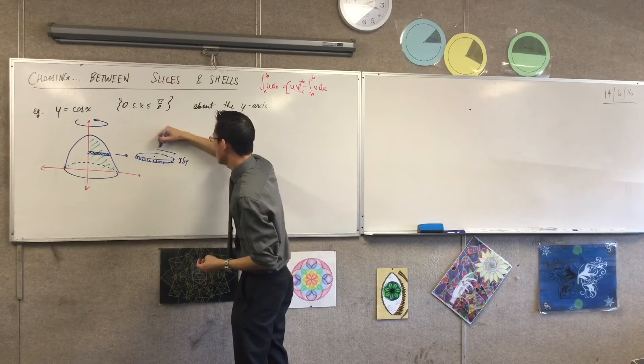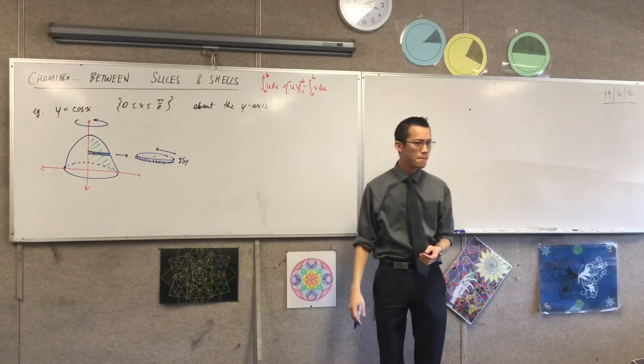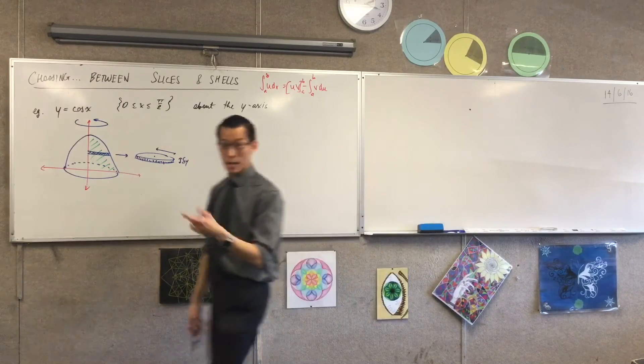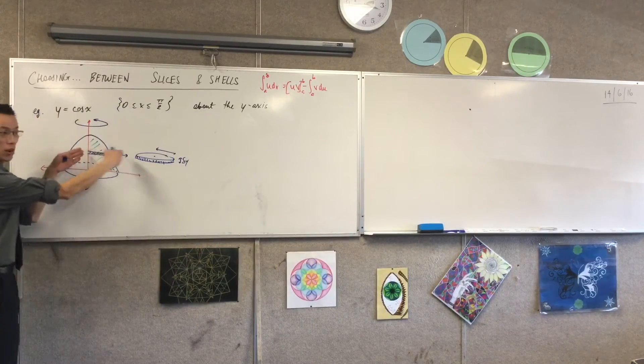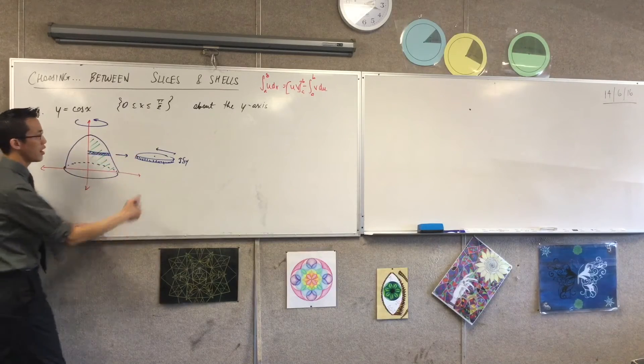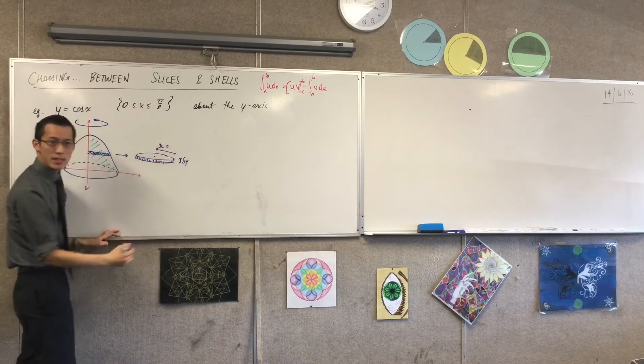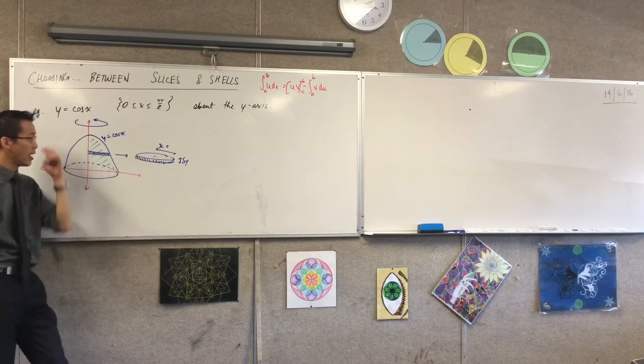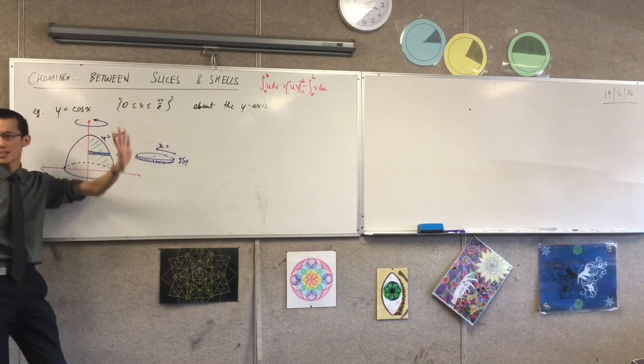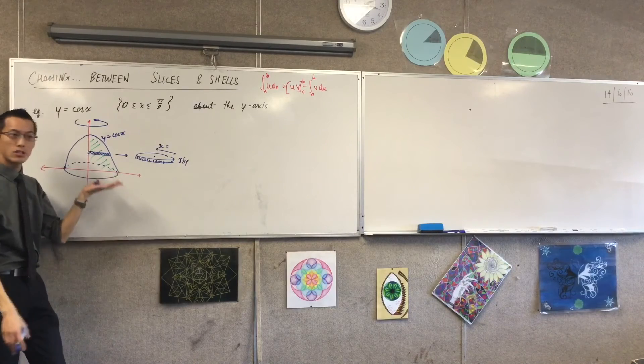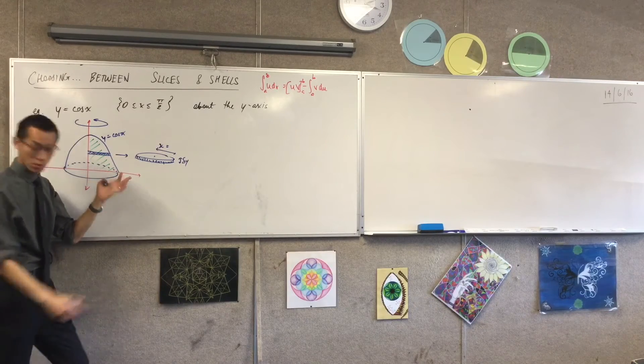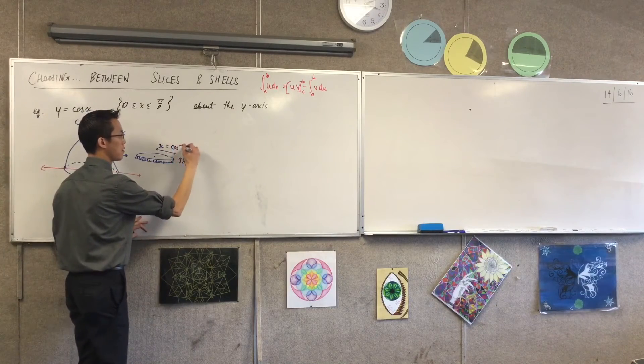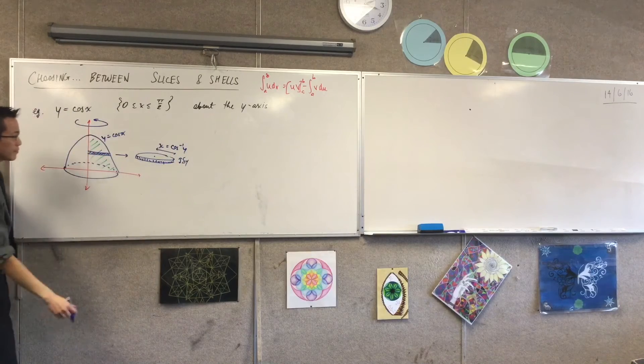And then the only other thing you need to work out is this, because you don't even have an inner radius and an outer radius, do you? You just have a radius. So what is this radius here? It's just the x-coordinate, isn't it? Because look, it's horizontal, clearly. So the x-coordinate, what is the x-coordinate? Well, remembering that this is y equals cos x, and noting the domain which is a nice, pleasant domain, x is just going to be equal to cosine inverse of y.